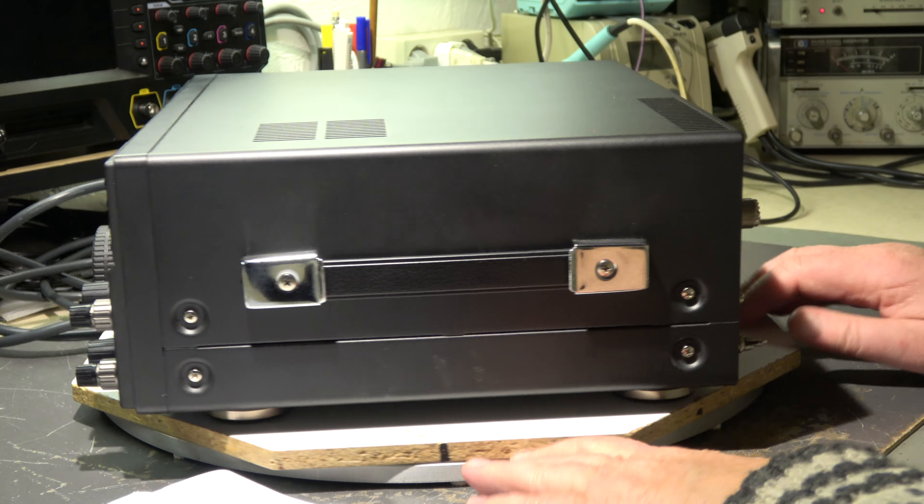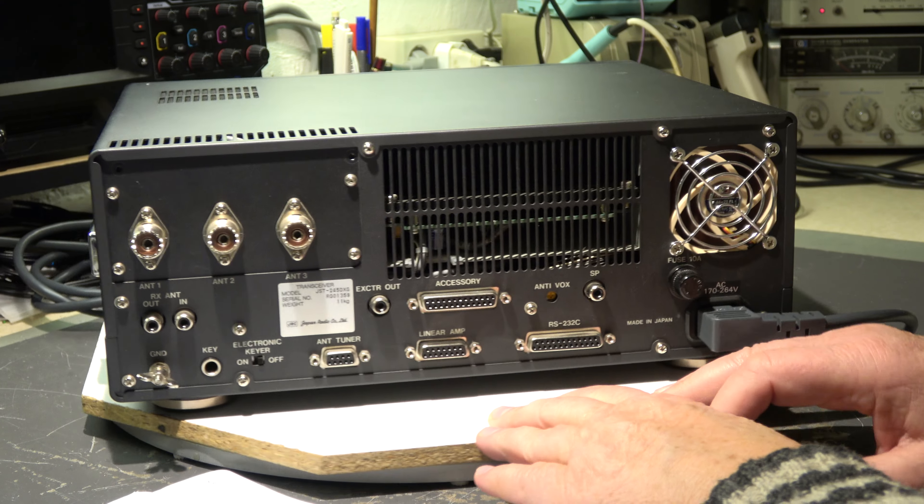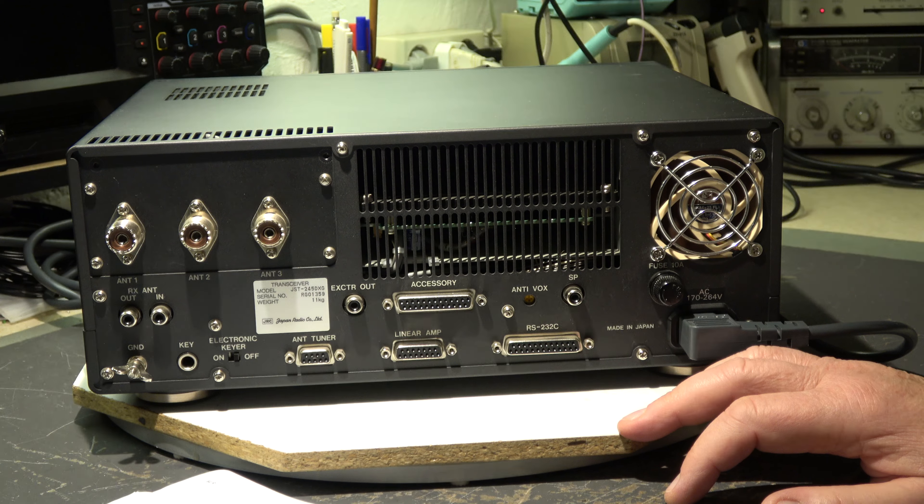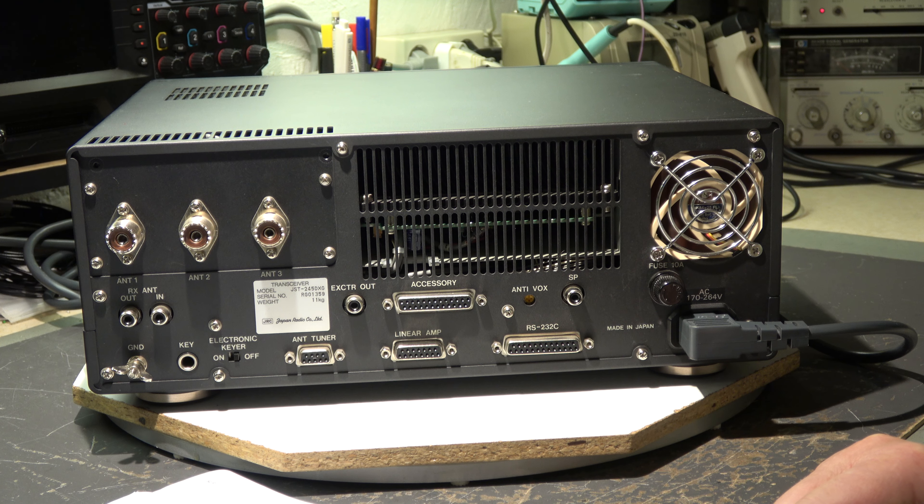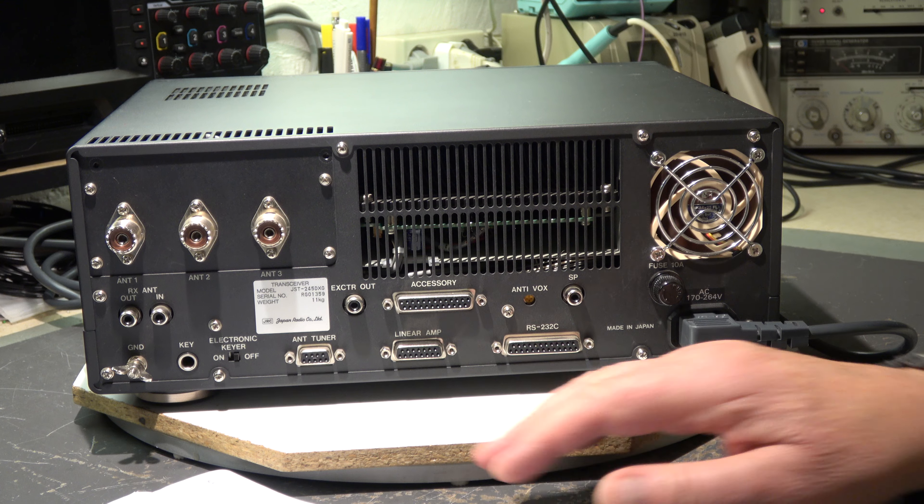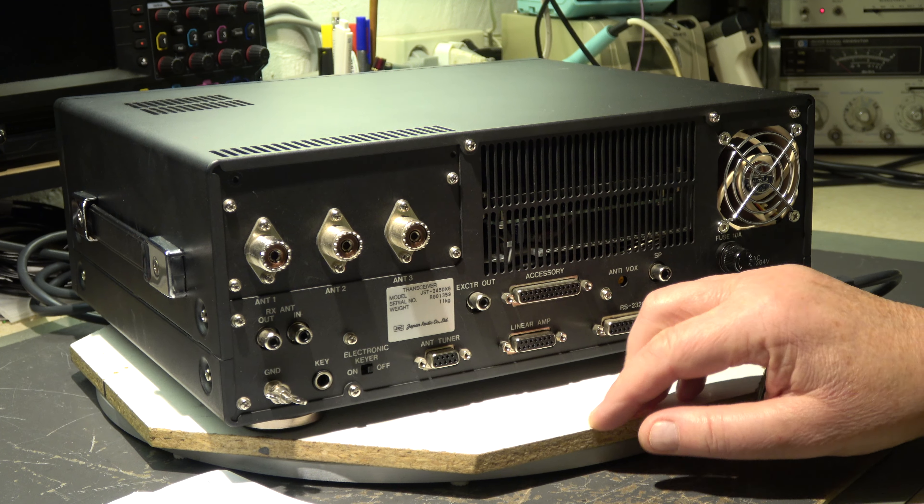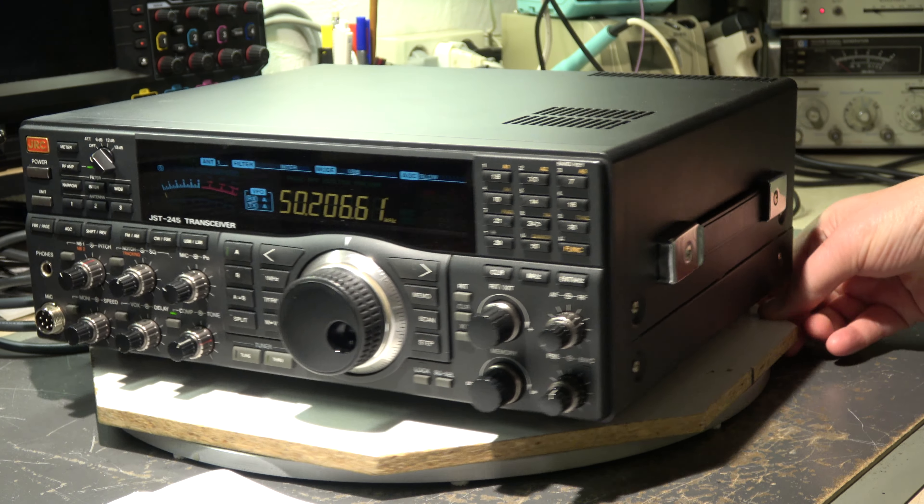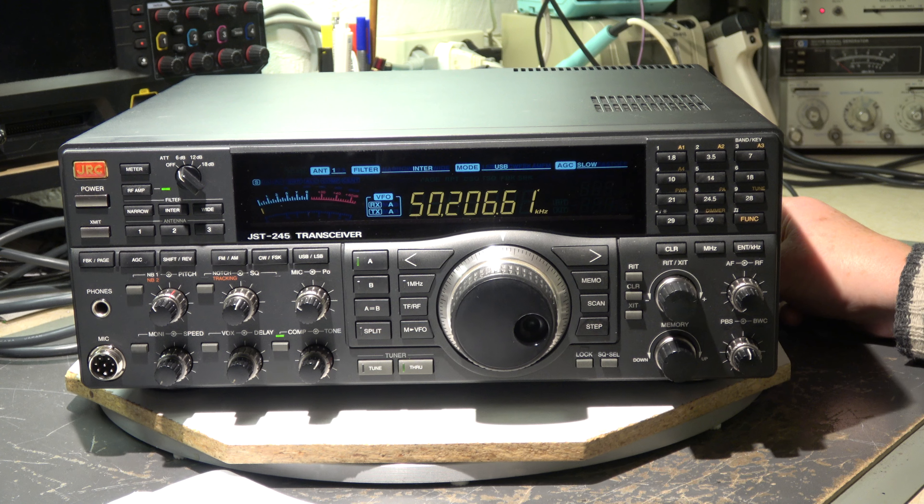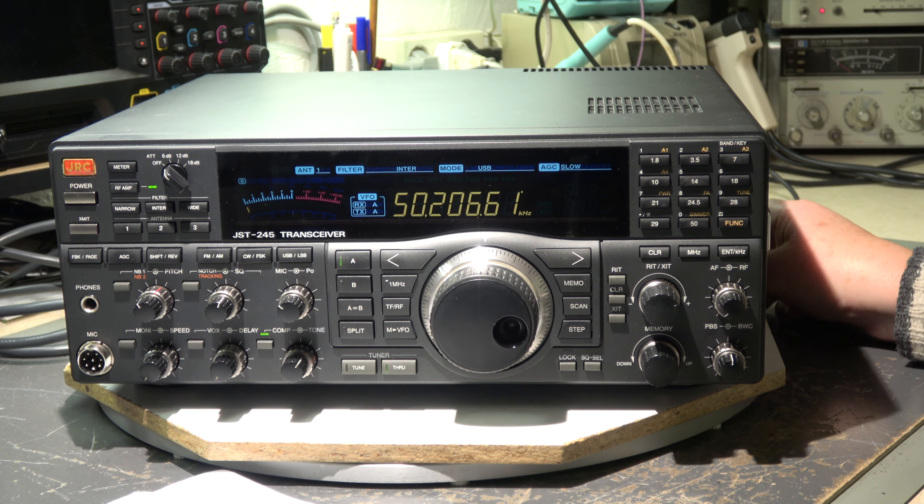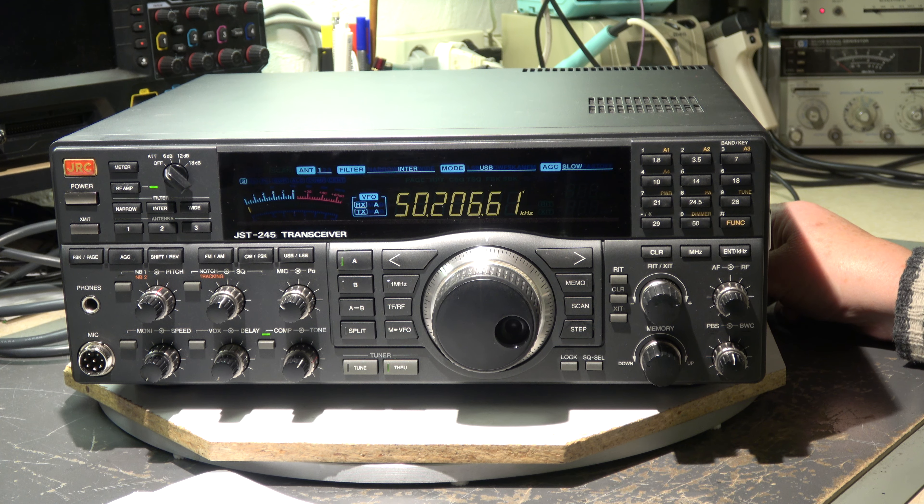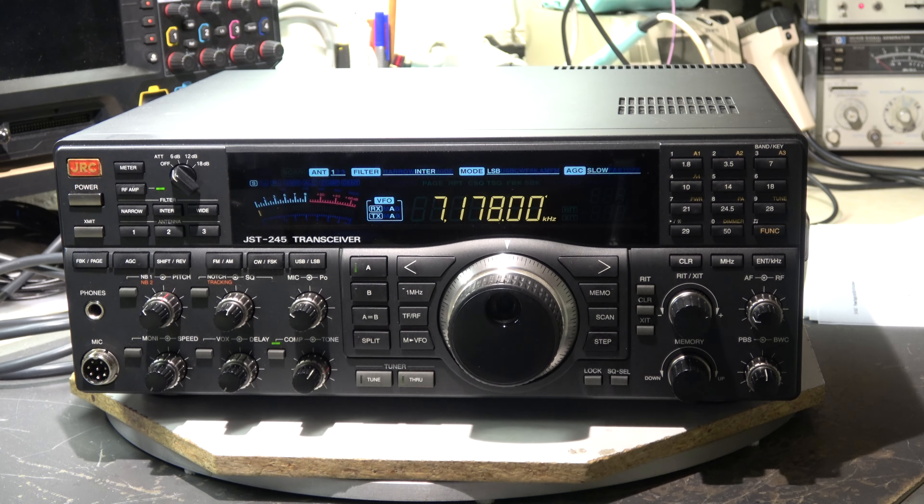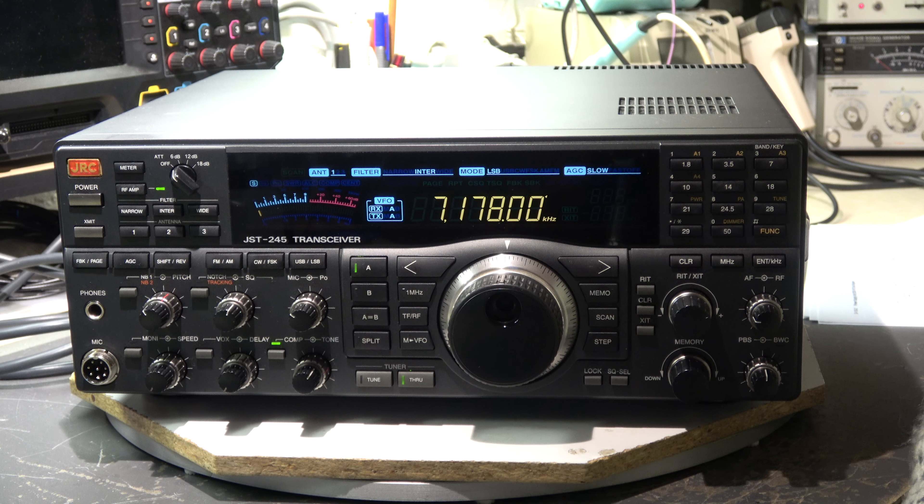Vox, compressor. Here we have the bandwidth tuning and setting, bandwidth control and passband tuning, passband shift. Three antennas can be selected, some interface connections. Electronic here, off, on, okay. Well, you see it's a very good equipped high-tech transceiver, but obviously if there's a problem...